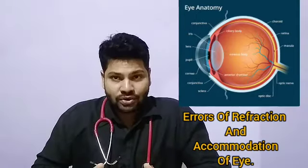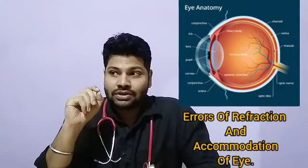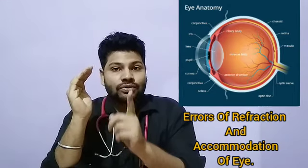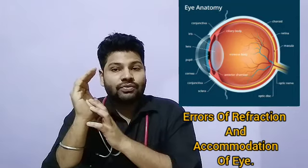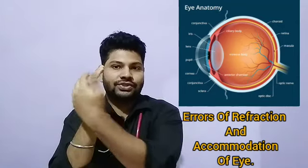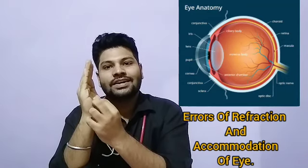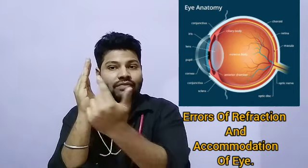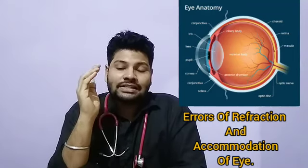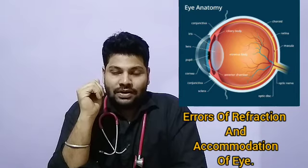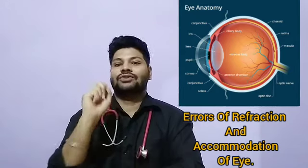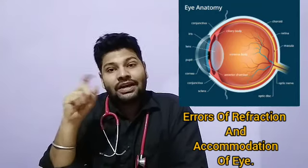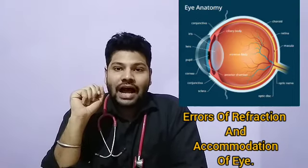Hypermetropia is caused because of the flattening of the cornea. The cornea is normally curved, but whenever its curvature changes — when the length of the cornea is increased — it is unable to focus light properly. The vision light cannot be perceived properly, and because of that the person, especially children, cannot see the far-away object. This is hypermetropia.